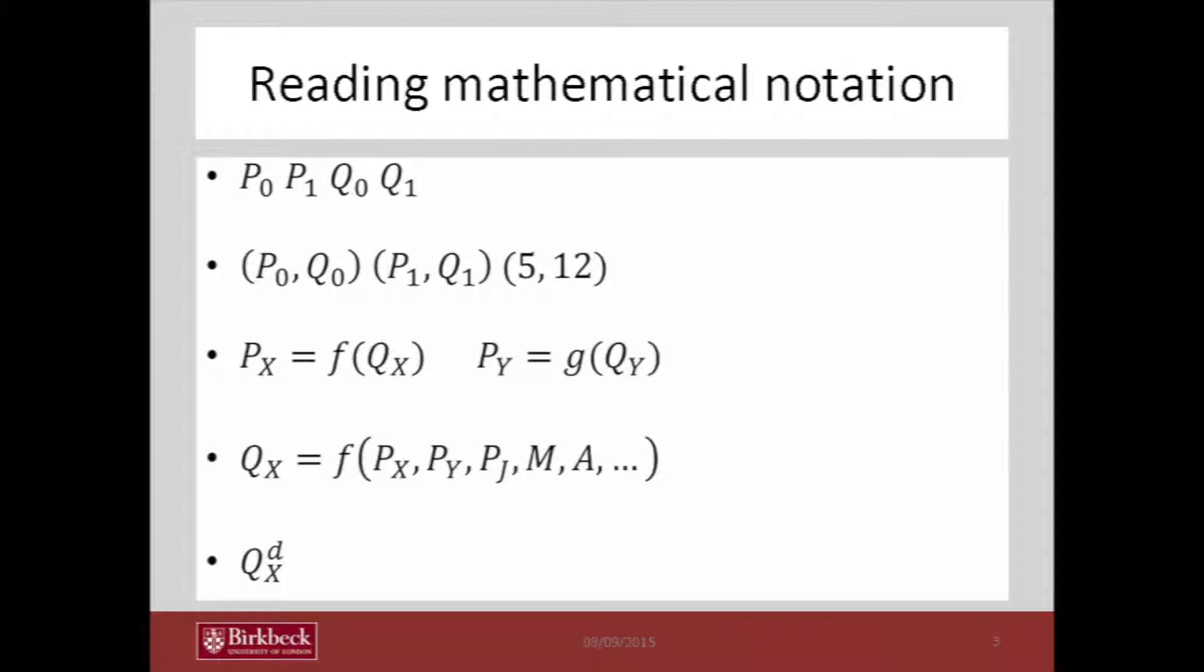In mathematics every letter means something special. For example, in microeconomics when you see the capital P that usually refers to price and the capital Q usually refers to quantity. But what is the purpose of the 0 and 1 in the subscript? Well, using different notation in the subscript we are notifying that we are talking about different prices or different quantities.